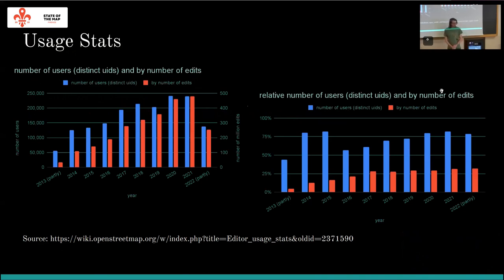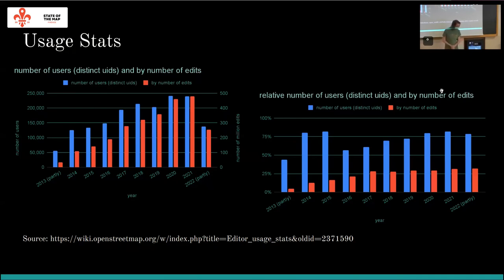The last slide in the look-back section covers user statistics. On the left are absolute numbers, on the right the same as percentages of the overall OSM user base. In blue are users who have used iD over the respective year, and in red the total number of edits. Interestingly, the red bars grow faster than the blue bars, meaning each iD mapper is making more edits per year. Note that the most recent years are not complete yet, so the apparent drop is just an artifact.